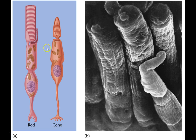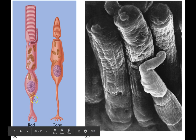Here's a rod and a cone. These are artists' representations. This is the outer portion, and this is the inner portion. The inner portion contains the nucleus and some of the other organelles.